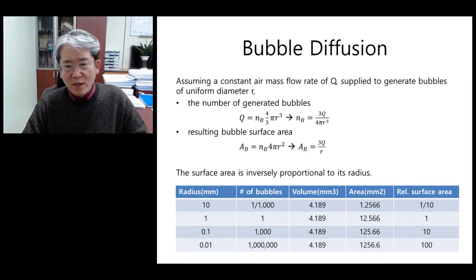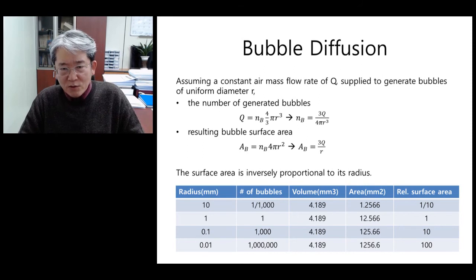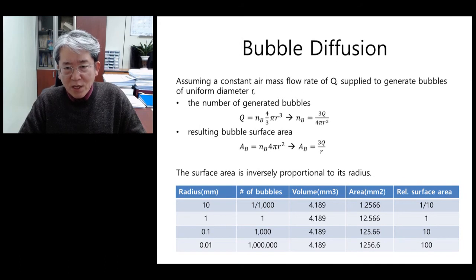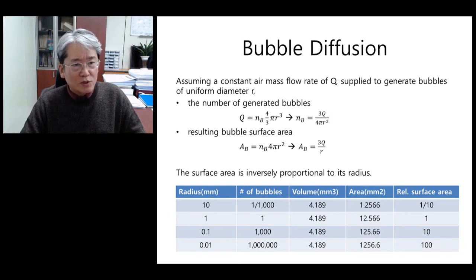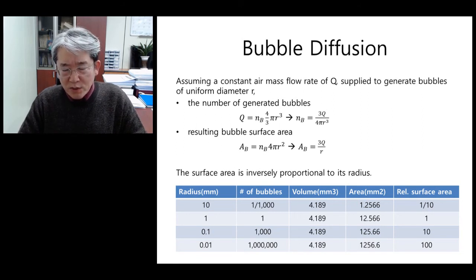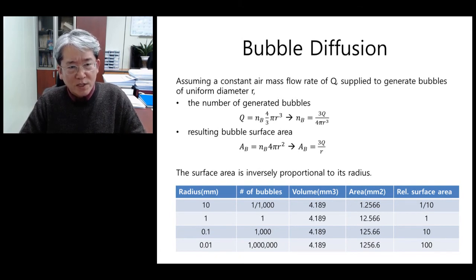Assuming a constant air mass flow rate Q supplied to generate bubbles of uniform diameter R, the number of generated bubbles can be calculated, and the resulting bubble surface area can be calculated for that number of bubbles. According to the relationship, the surface area is inversely proportional to its radius, which means as the radius of bubbles gets smaller, higher mass diffusion is expected.